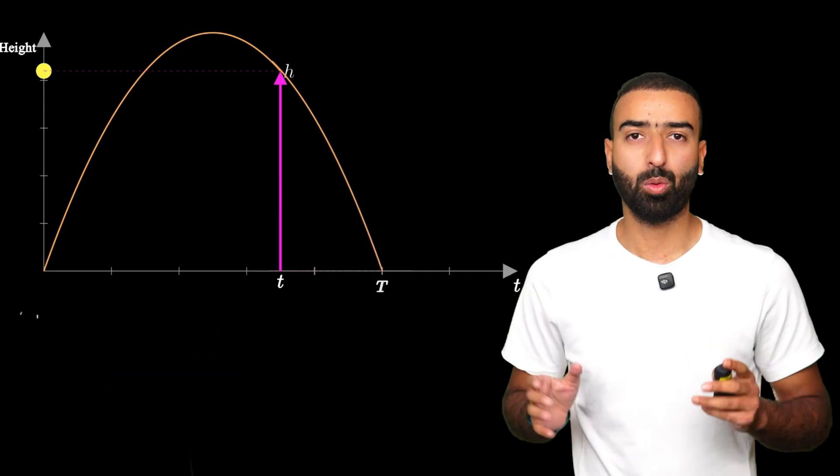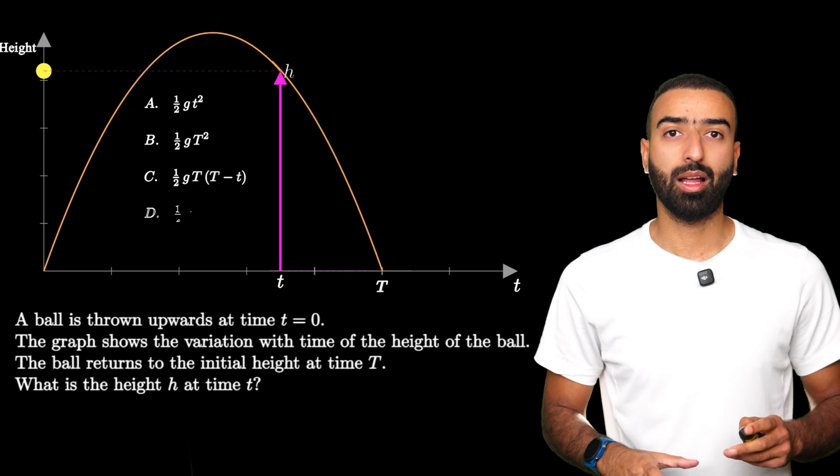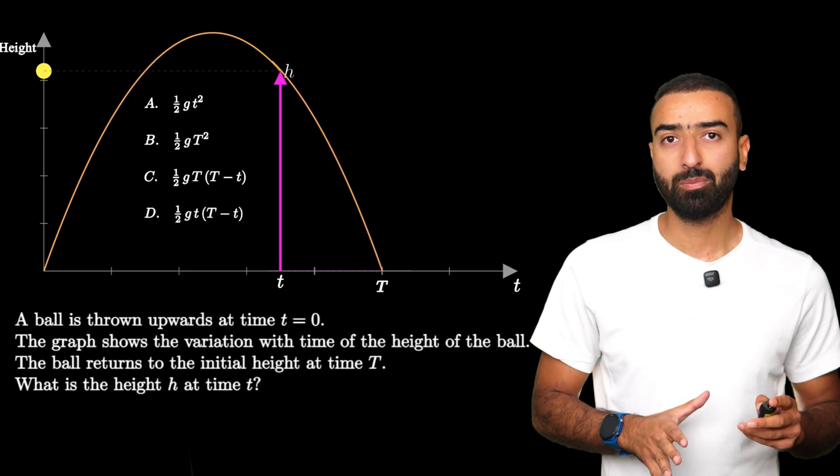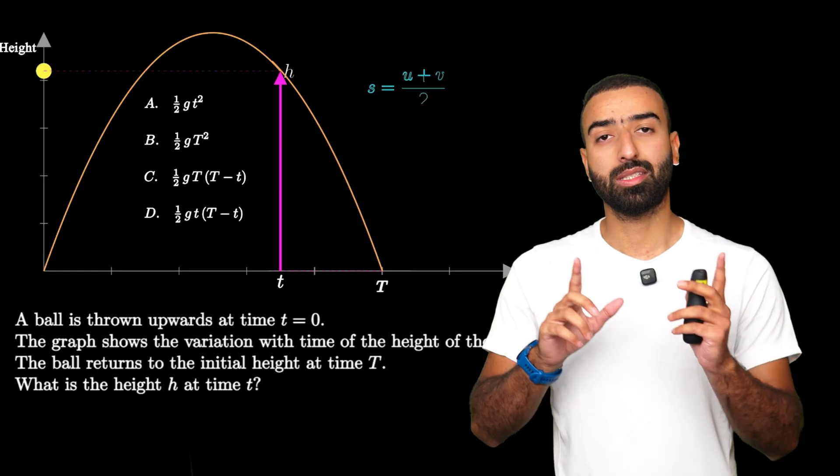Here's what the question is asking. You throw a ball straight up, it lands on the ground at time capital T. We are interested to find its height at a time instant T.